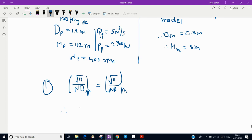Now we have all the values for prototype: head is 112 meter, N is 400 rpm, diameter is 1.2 meter. Similarly here, head is 8 meter.